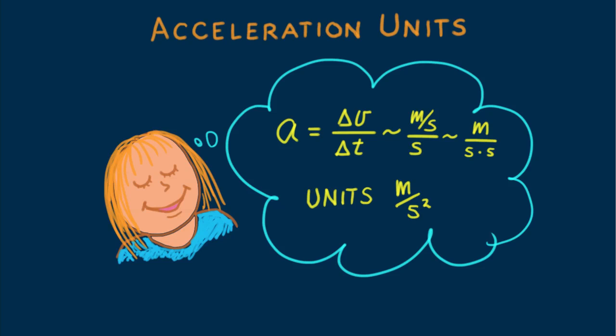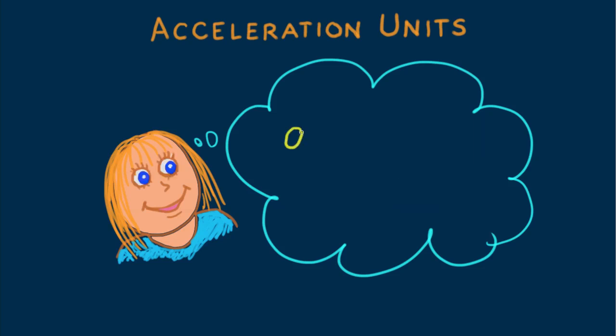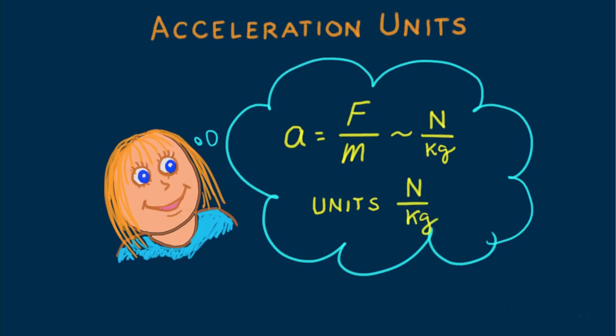When we use Newton's second law for acceleration, A is F over M, our units are newtons per kilogram. That's so many newtons per so many kilograms. What goes on here?